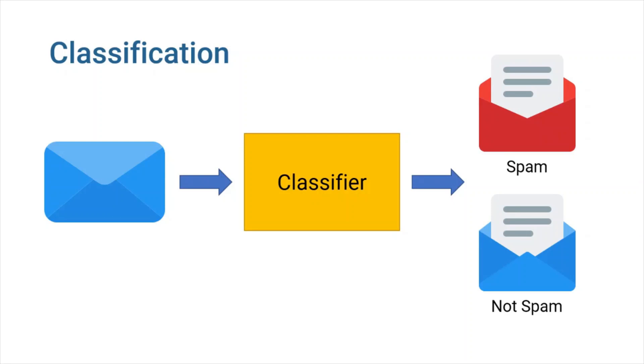As another example, consider spam filtering. Email services use features like the sender address and email content to classify new emails as either spam or not spam. Since there are only two different tags, this is called a binary classification problem.